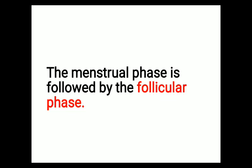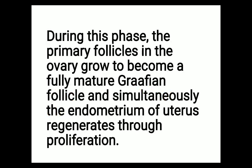The menstrual phase is followed by the follicular phase, which is the second phase. During the follicular phase, the primary follicles in the ovary grow to become a fully mature Graafian follicle, and simultaneously the endometrium of the uterus regenerates through proliferation. Two events take place: formation of a mature Graafian follicle inside the ovary, and regeneration of the endometrium.